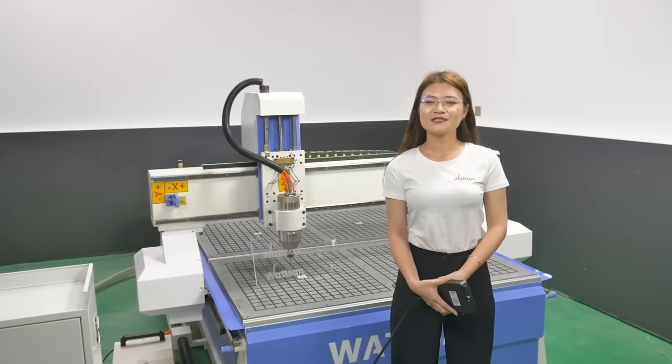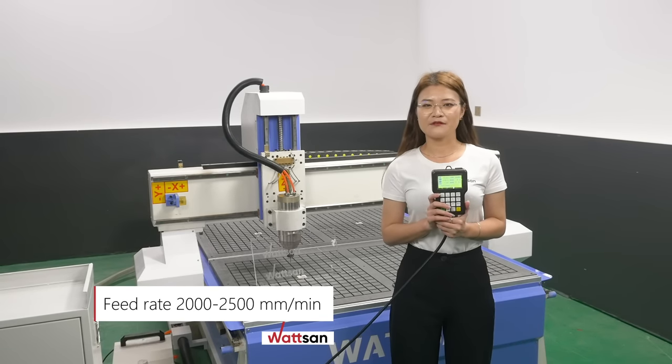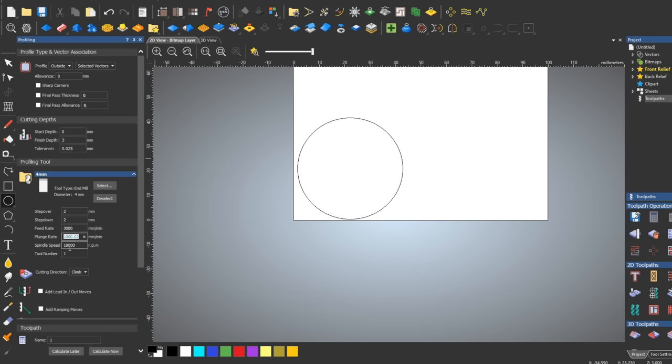In a practical way, we have identified the optimal feed rate for us. It is 2,000 to 2,500 mm per minute. At higher speeds, there is the risk of breaking the cutter.